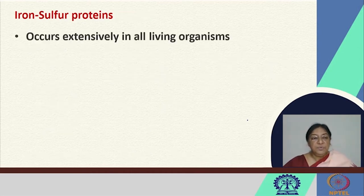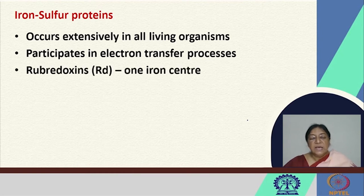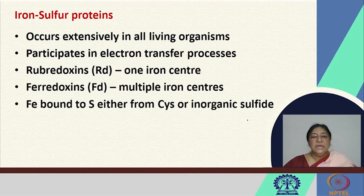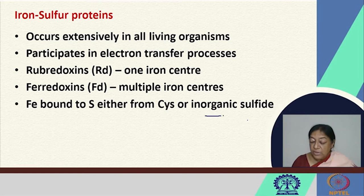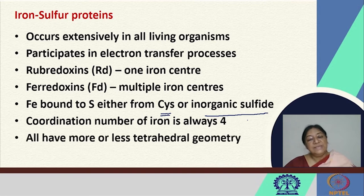The iron sulfur proteins occur extensively in living organisms and participate in electron transfer processes. We have an example called rubredoxins. These rubredoxins have one iron center, while ferredoxins have multiple iron centers. The iron is bound to sulfur either in the form of an inorganic sulfide or in cysteine, with a coordination number of 4 and tetrahedral geometry in their structural aspects.